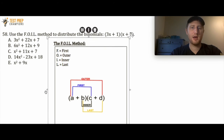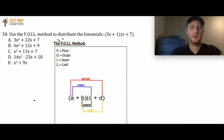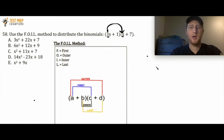Here's my graphic for the FOIL method. The F in FOIL stands for First. I look at my first binomial, 3x + 1, and I see 3x. In the second I see x. I want to take the first terms in each set of parentheses and multiply them. So what is 3x times x? 3x times x is going to be 3x squared.